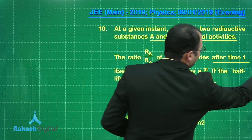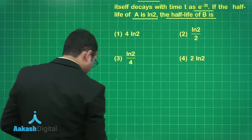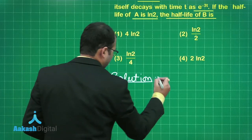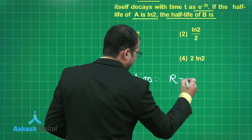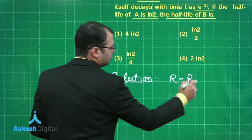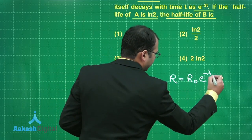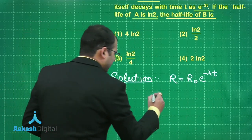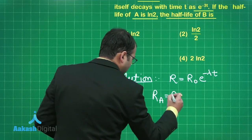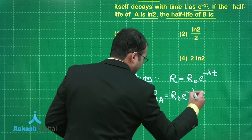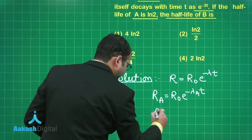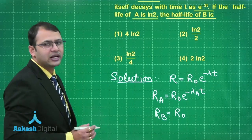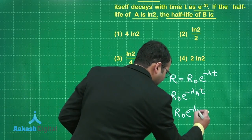It's a very simple question based on application of the formula. The formula for activity at any instant is R equals initial activity into e to the power minus lambda times t, where lambda is the decay constant and t is the time. Writing this for A: R_A equals R_naught times e to the power minus lambda_A times t, and R_B equals R_naught times e to the power minus lambda_B times t, since both have the same initial activity.